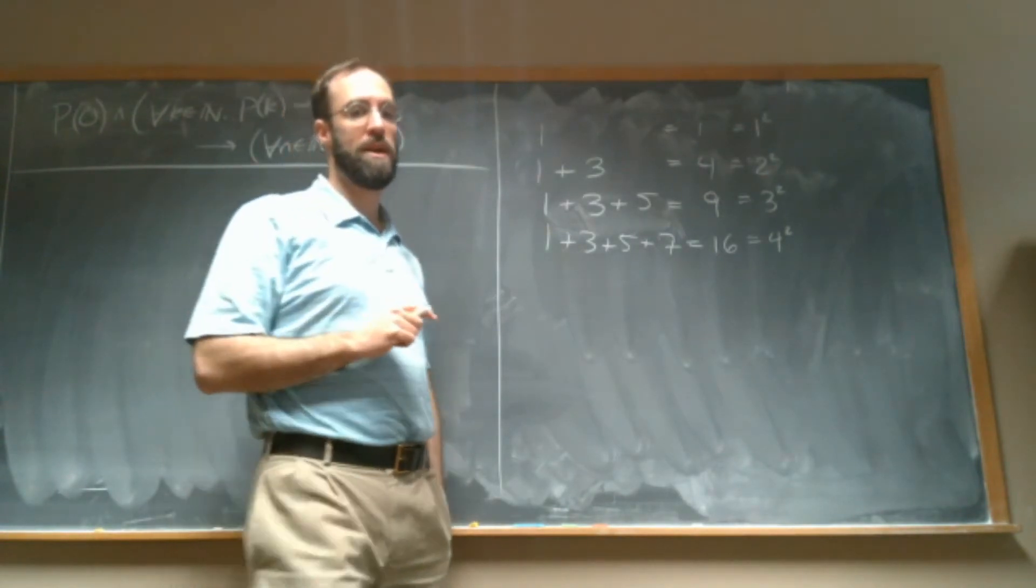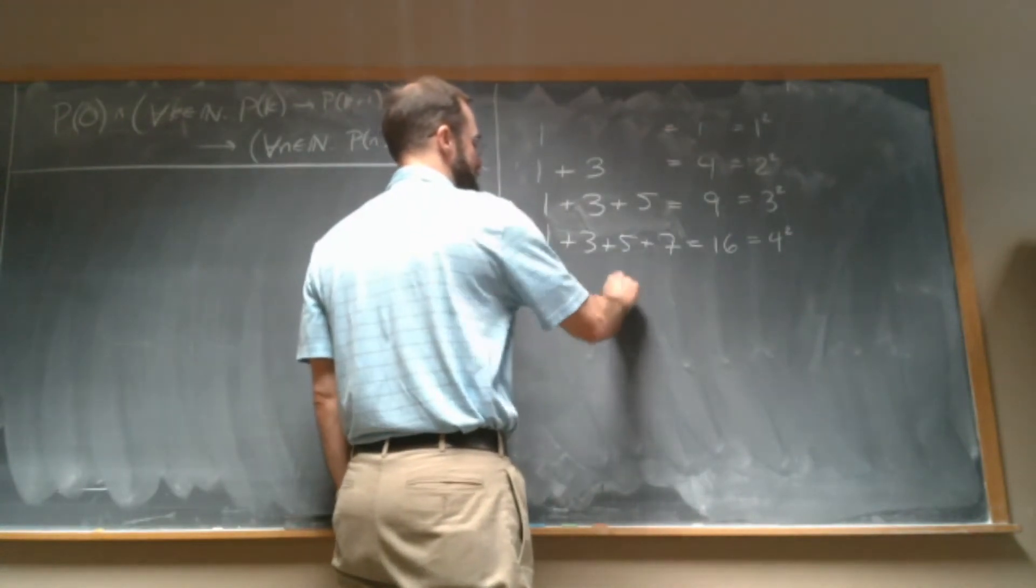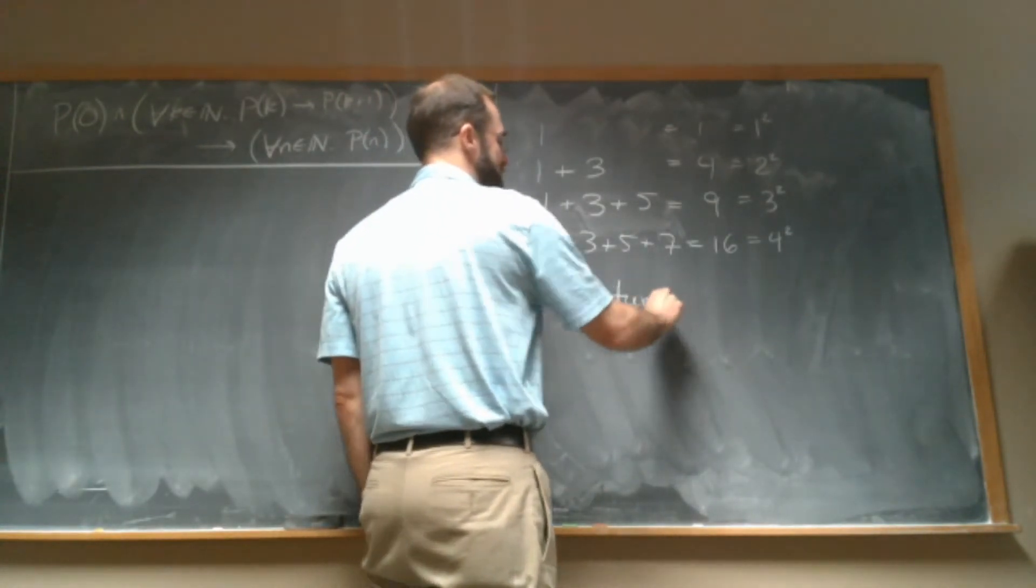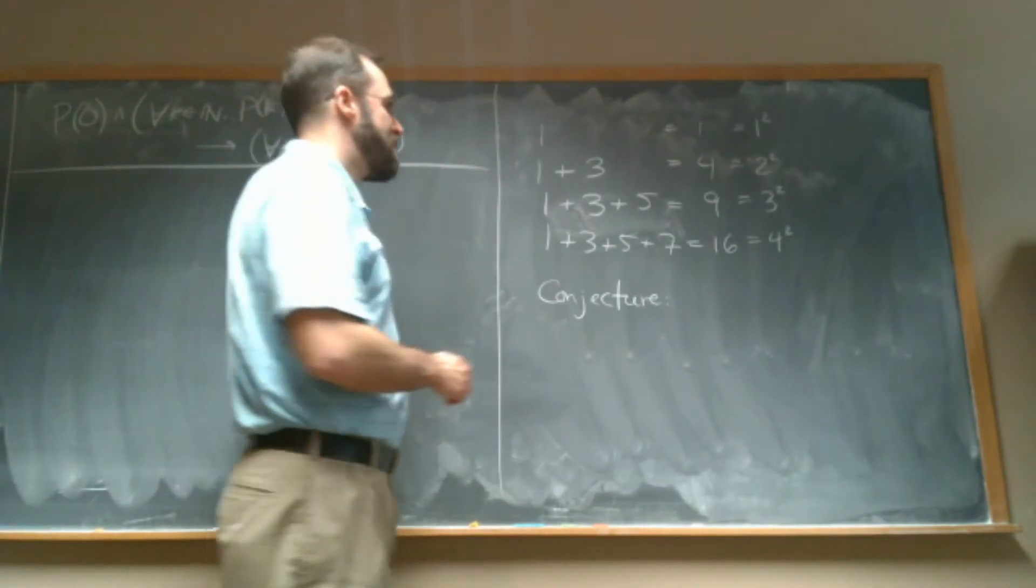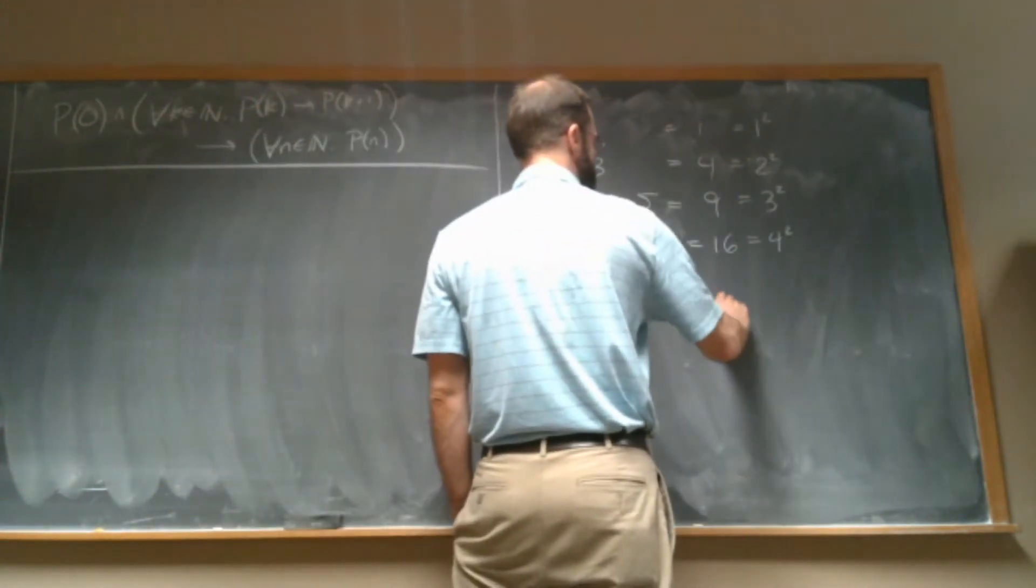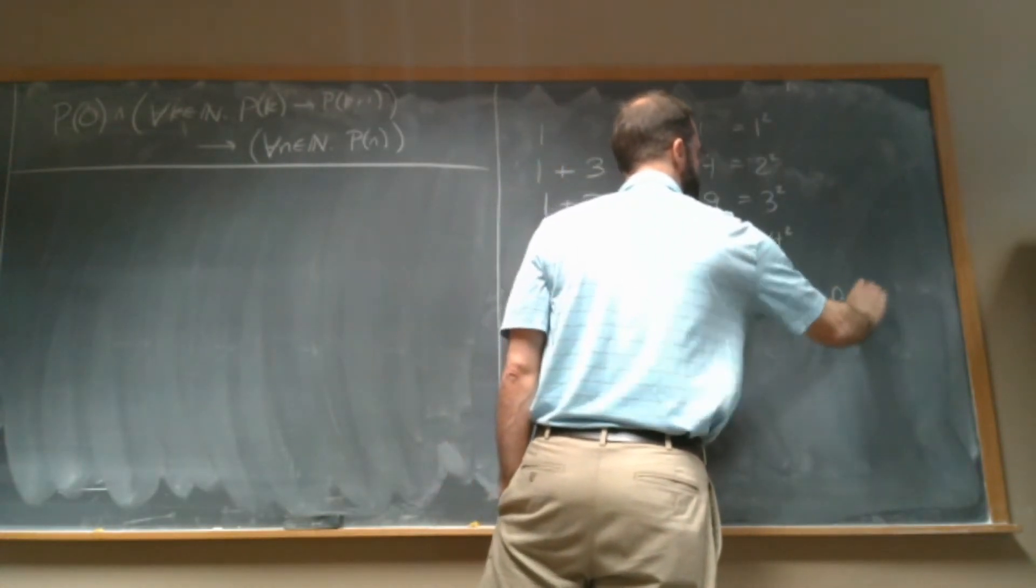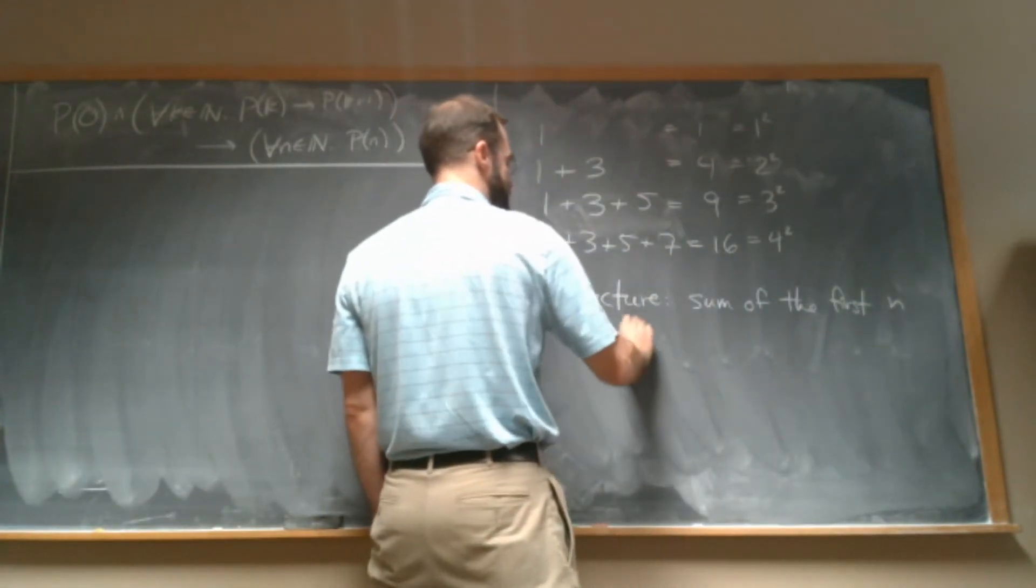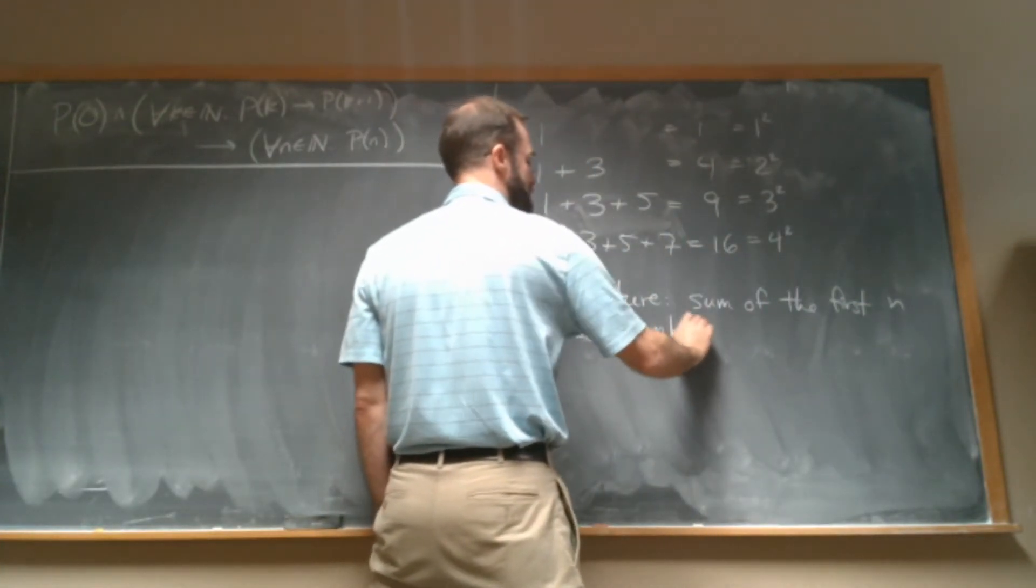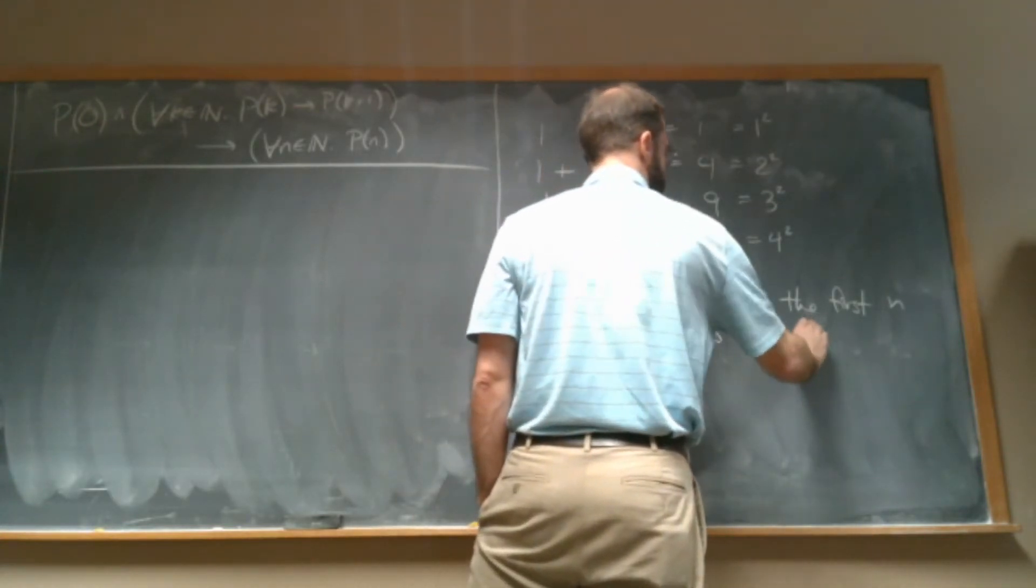So we're gonna start by making a conjecture. So our conjecture is, right, remember a conjecture is just a fancy mathematical word for a guess. It's something that we think might be true, but we don't know yet.